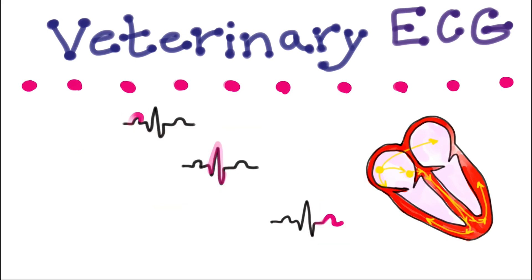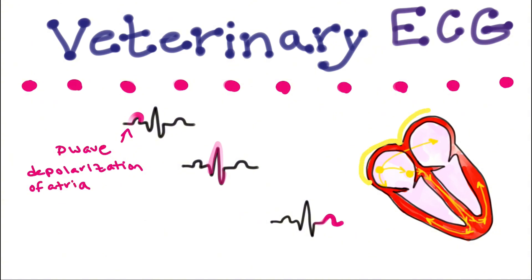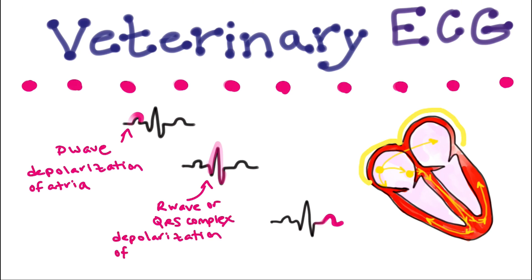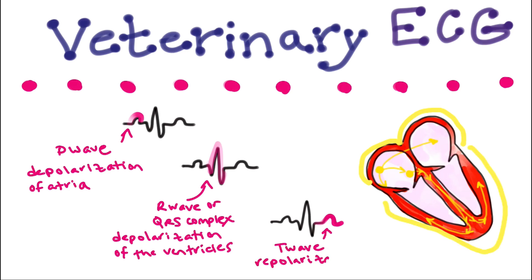The first part of the ECG tracing is the P wave, which represents depolarization of atrial muscle cells. The next waveform is called the QRS complex, which represents depolarization of ventricular muscle cells. Finally, there's a smaller wave called the T wave, which represents repolarization of the ventricle.